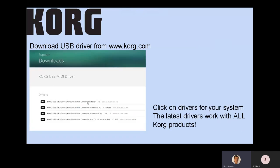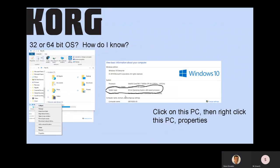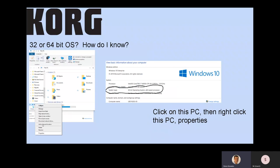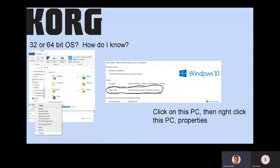You have different systems, of course, if you're Mac-based or Windows-based. Make sure you download the appropriate driver for your system. If you're not sure, you can left-click on My PC or This PC, then right-click and go to Properties, and you will see the system information. In this case, it's Windows 10 and a 64-bit operating system.